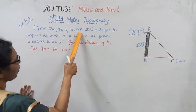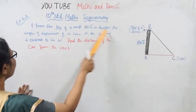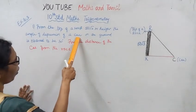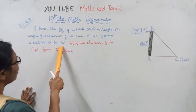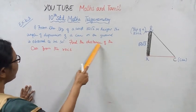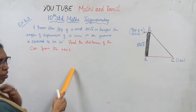From the top of a rock 50√3 meters in height, the angle of depression of a car on the ground is observed to be 30 degrees. Find the distance of the car from the rock.